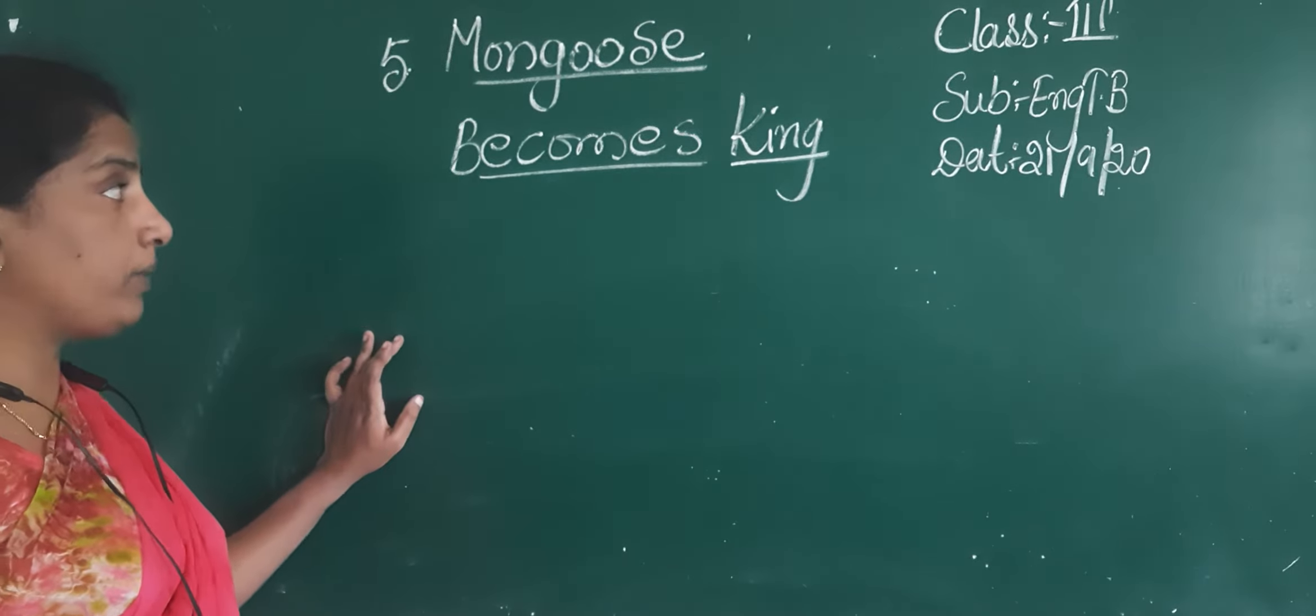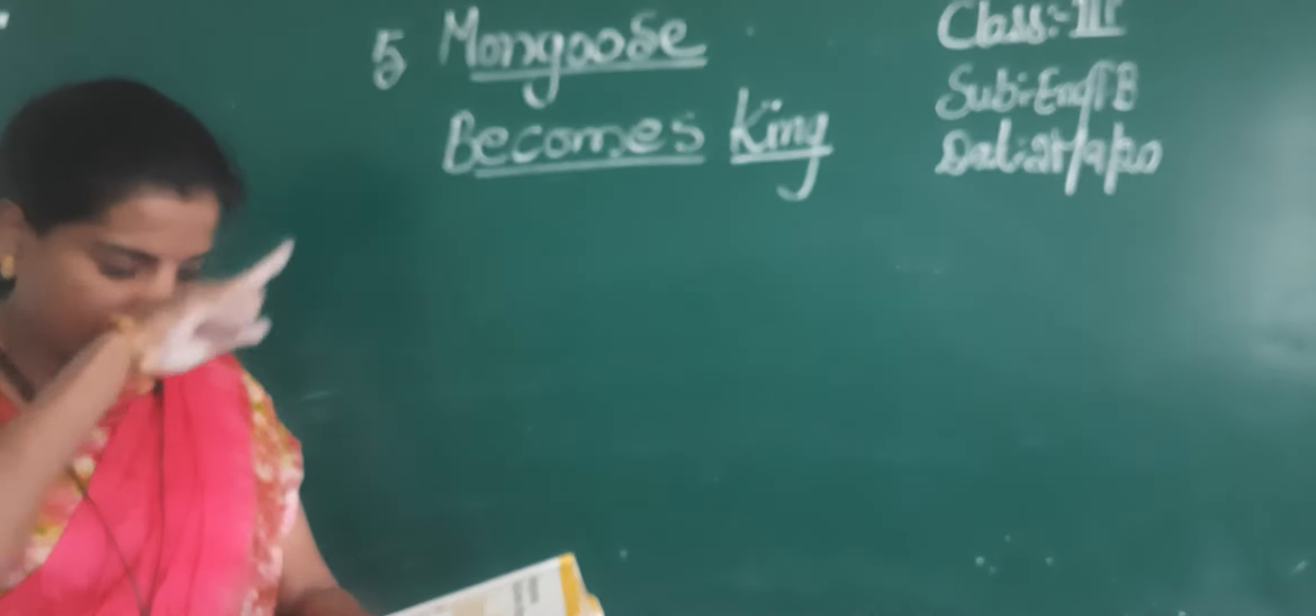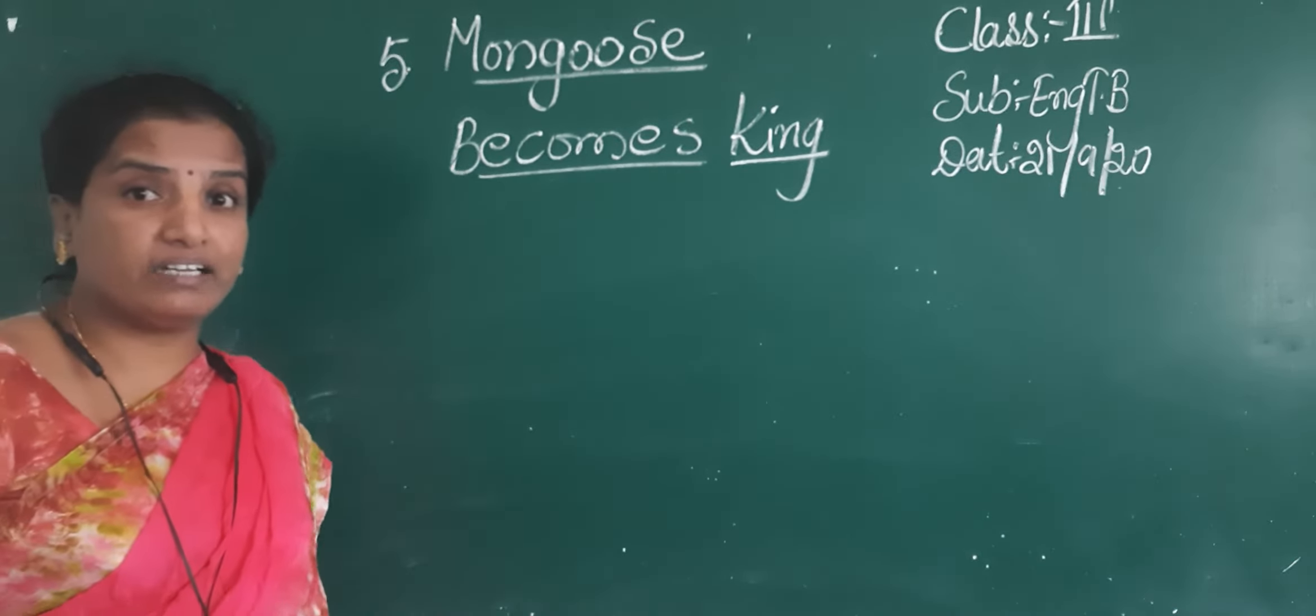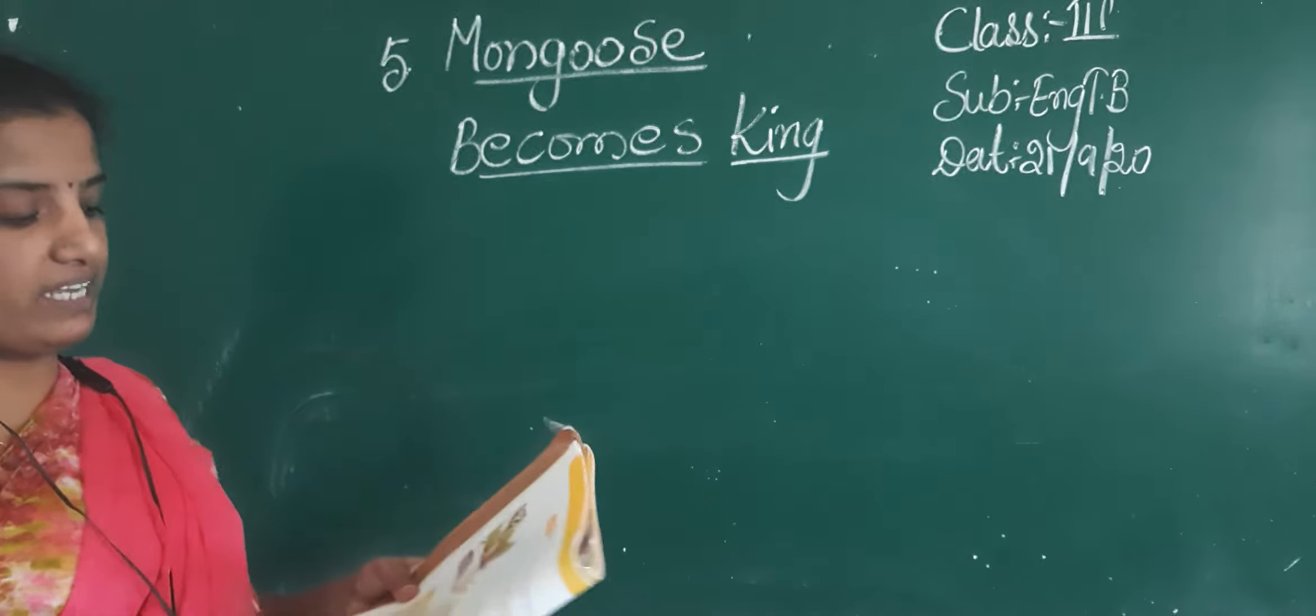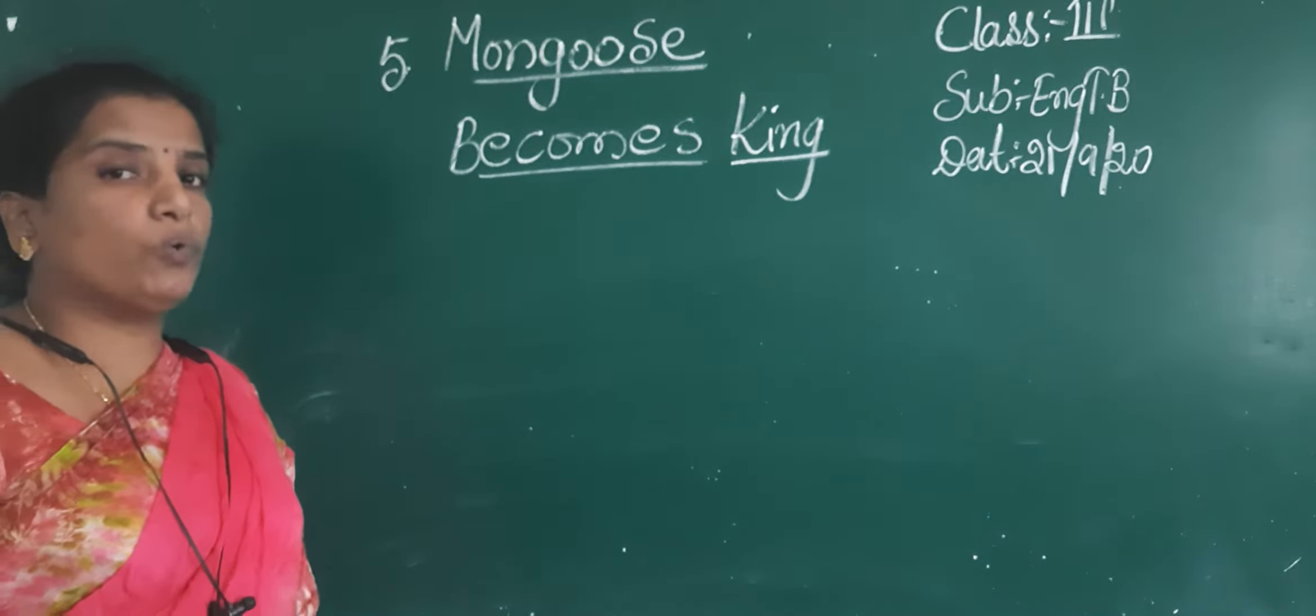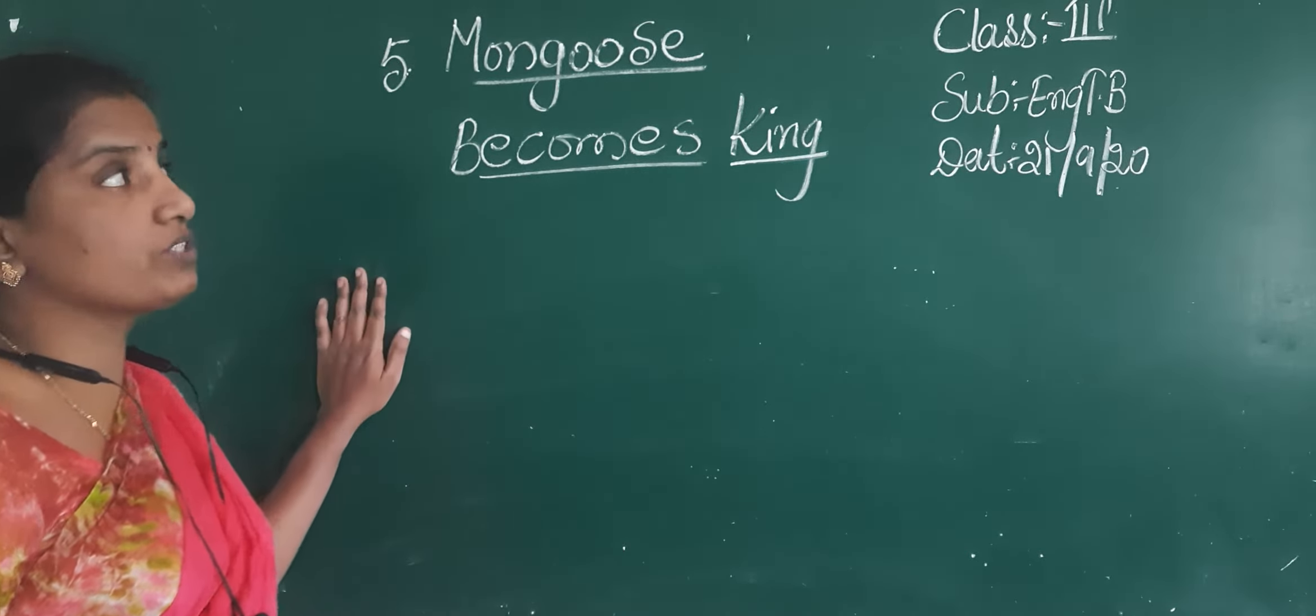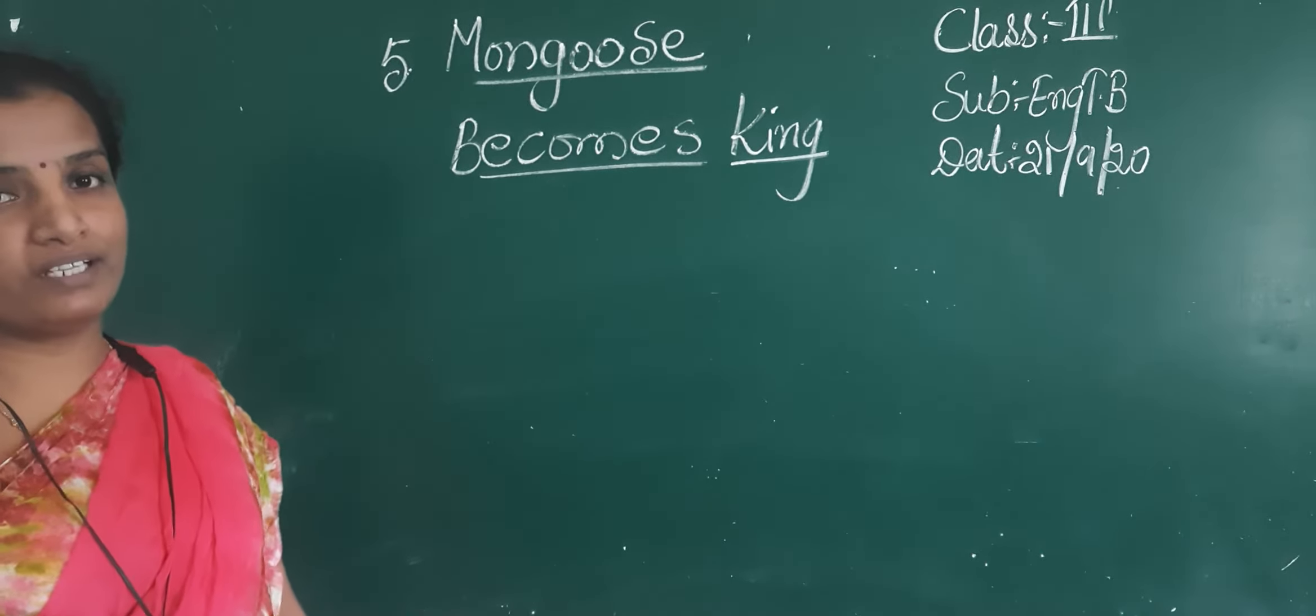Okay, now our next story when a mongoose becomes king. Mongoose is a type of animal, you may have seen it. What we will say now, it will eat the animals, snake, sorry, it will eat the snake. See, how this mongoose becomes king. Actually, who is the king of the jungle? Lion is the king of the jungle. But here in our story, they have explained us about the mongoose becomes king. How this mongoose becomes the king. This is all about the story.